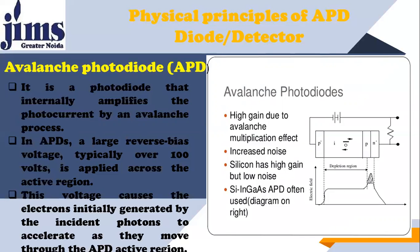The reason for this high reverse voltage is that we want a high electric field established in the active region. Due to this high electric field, we have high electric force. Looking at the figure, this is the reverse biased region — this is the active region, and that region is the intrinsic region, meaning a high-resistive region. Because of that, most of the voltage appears on that region, producing an electric field and electric force.